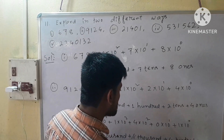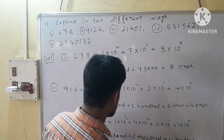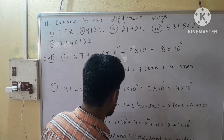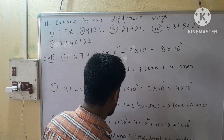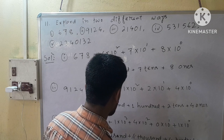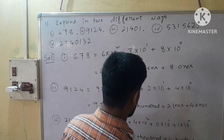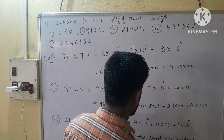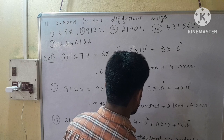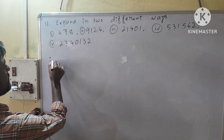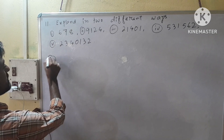That is one different way. We write in another different way: 20,000 plus 1,000 plus 400 plus 0 tens plus 1.